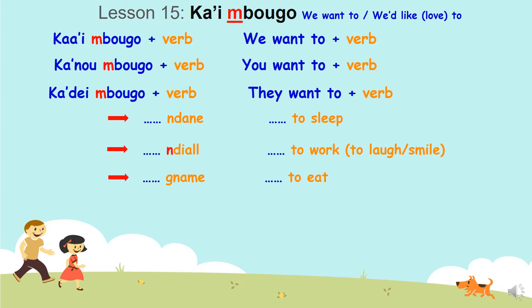Eat. Ka imbugo dan — we want to eat. Ka numbugo dan — you want to eat. Ka dembugo dan — they want to eat.